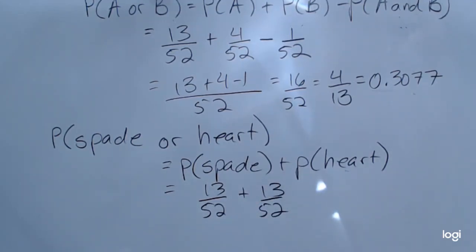Because there are four suits, that's going to be 26 out of 52, or 0.5.